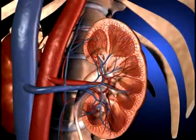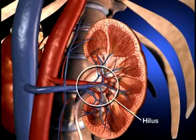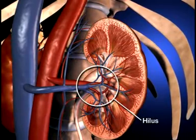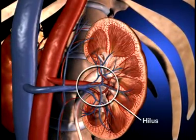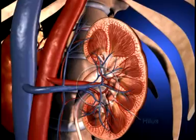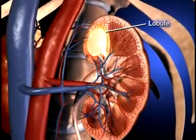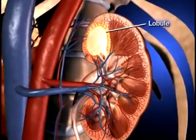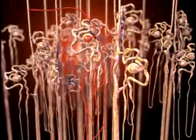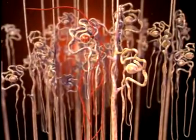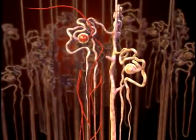The medial border of the kidney is indented by a deep fissure called the hilus, where the blood vessels, nerves, and ureters connect to the kidney. The kidney is composed of up to 18 lobes. Each lobe is composed of nephrons. Nephrons are the functional units of the kidney, and each kidney contains more than 1 million nephrons.